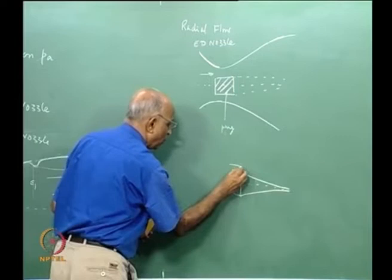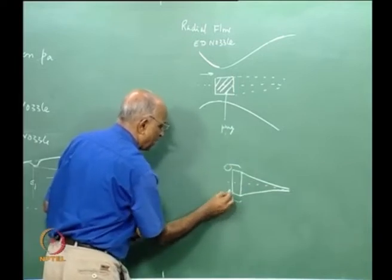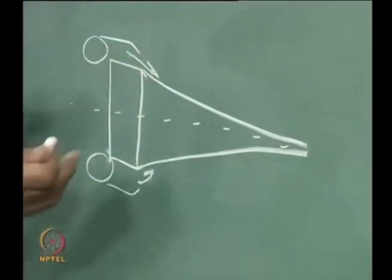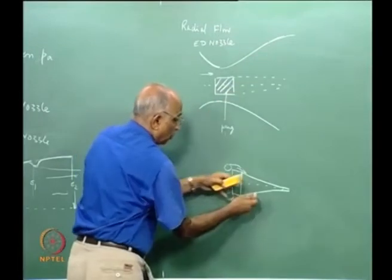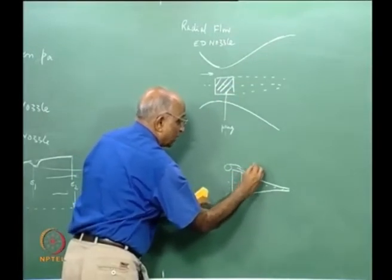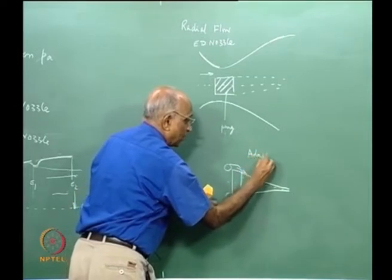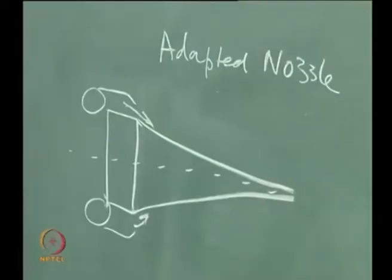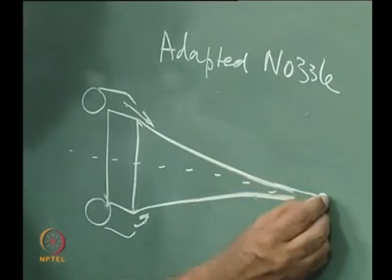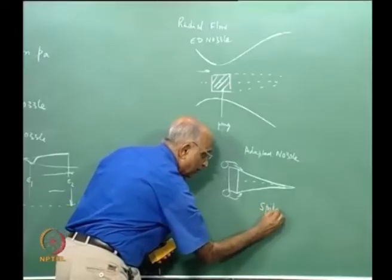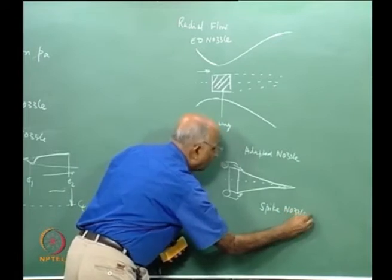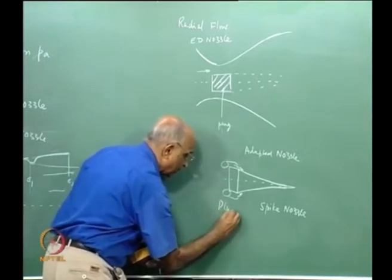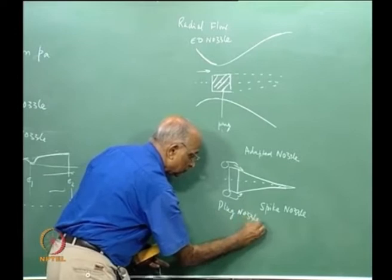I allow the inner contour to guide the flow and keep the outer open so it can adapt to any condition. I could have the central body in the form of a spike, in which case I call it a spike nozzle, or simply a plug nozzle. Because I put this plug inside the annular flow, I call it a plug nozzle.